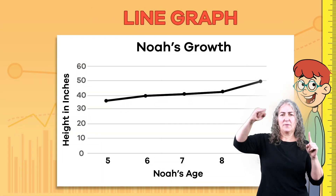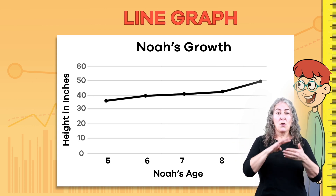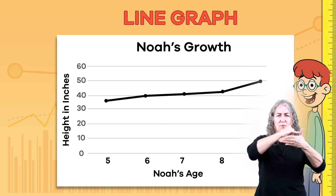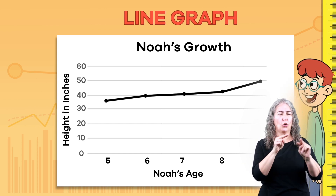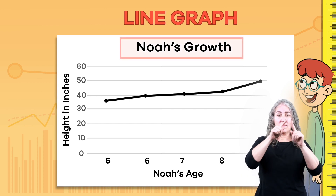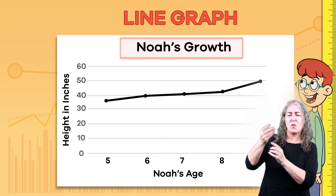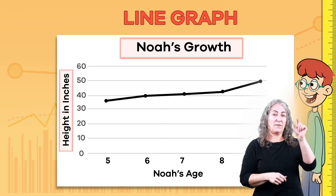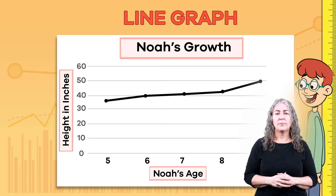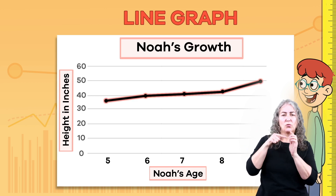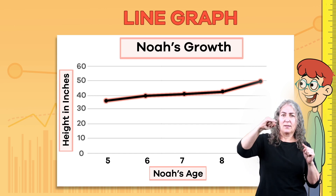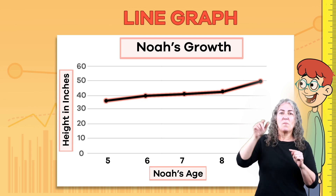Next, let's look at a line graph. These graphs are helpful when showing information over a period of time. Can you see why this type of graph is called a line graph? This graph is measuring how tall Noah grew as he got older. On the left side of the graph are numbers that represent inches, and Noah's age is listed across the bottom. The black line on the graph shows how tall he grew as he got older — you can see how the line moves upward. As Noah gets older, he also grows taller.